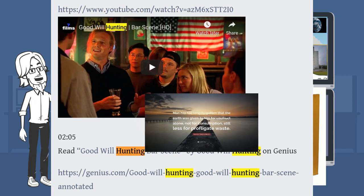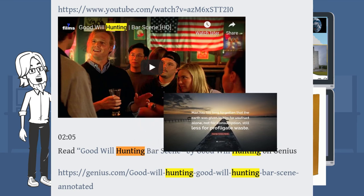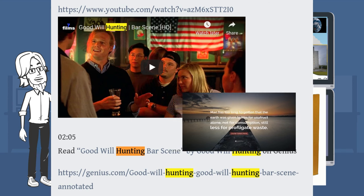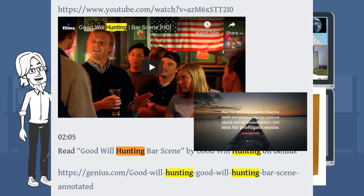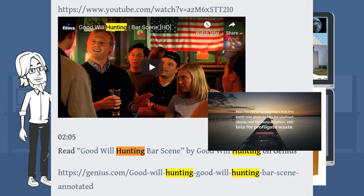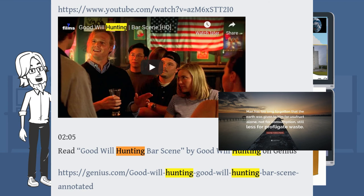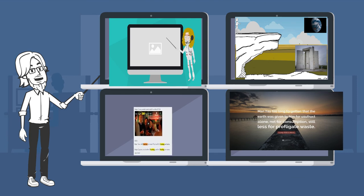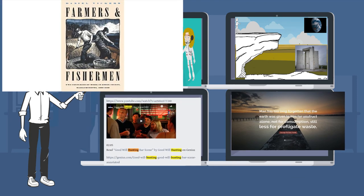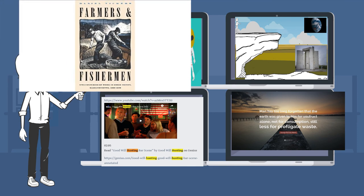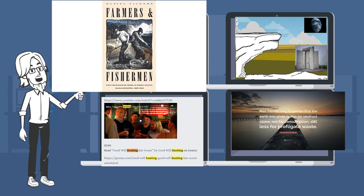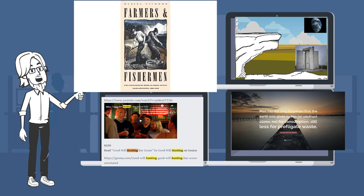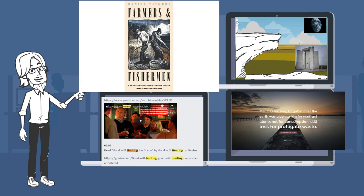Will, Matt Damon: Of course that's your contention. You're a first-year grad student. You just got finished reading some Marxian historian, Pete Garrison probably. You're gonna be convinced of that till next month when you get to James Lemmon, and then you're gonna be talking about how the economies of Virginia and Pennsylvania were entrepreneurial and capitalist way back in 1740. That's gonna last until next year; you're gonna be in here regurgitating Gordon Wood, talking about, you know, the pre-revolutionary utopia and the capital-forming effects of military mobilization.